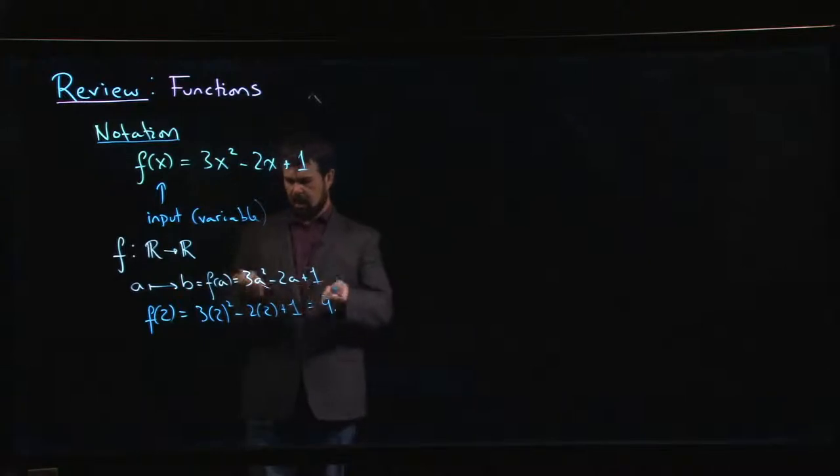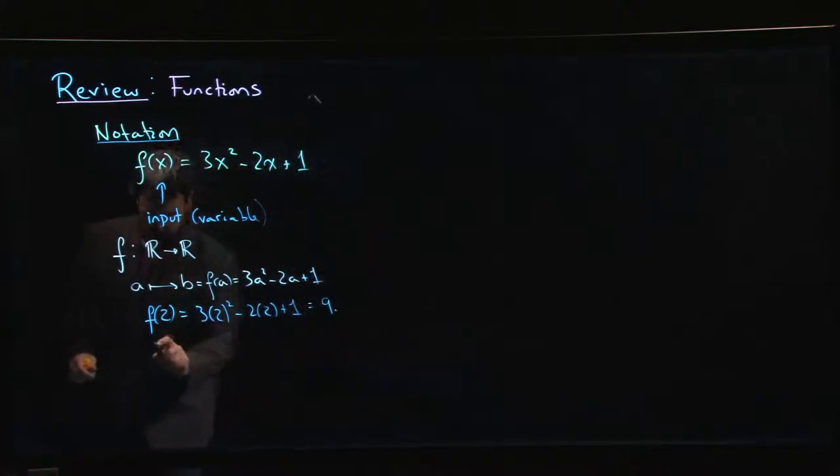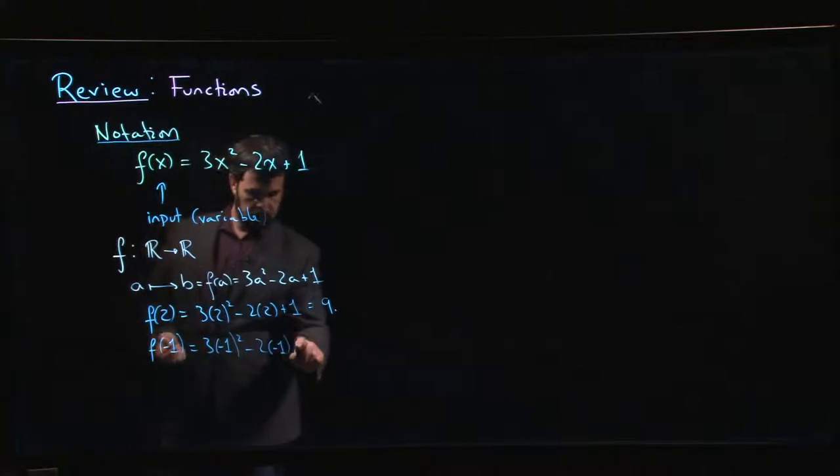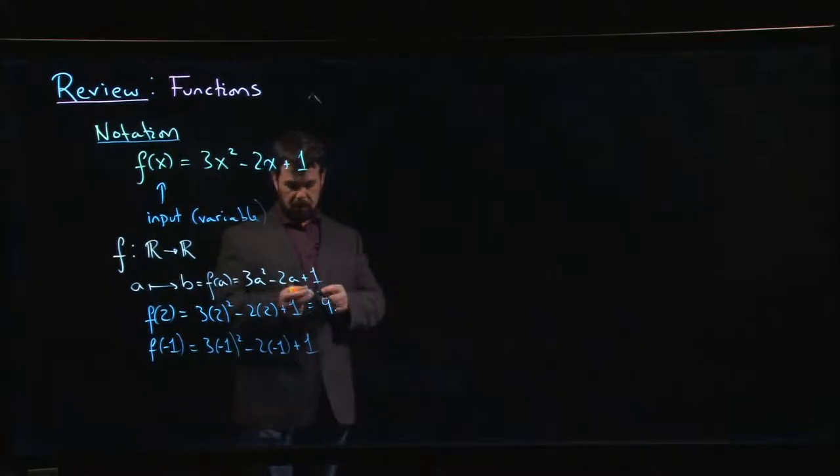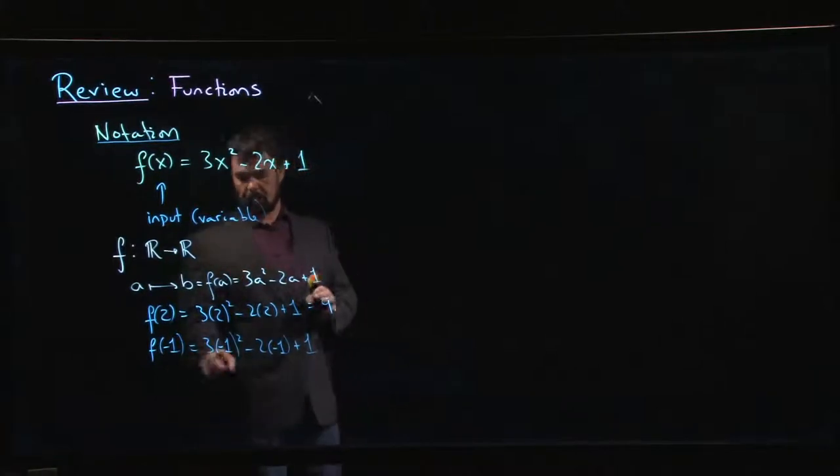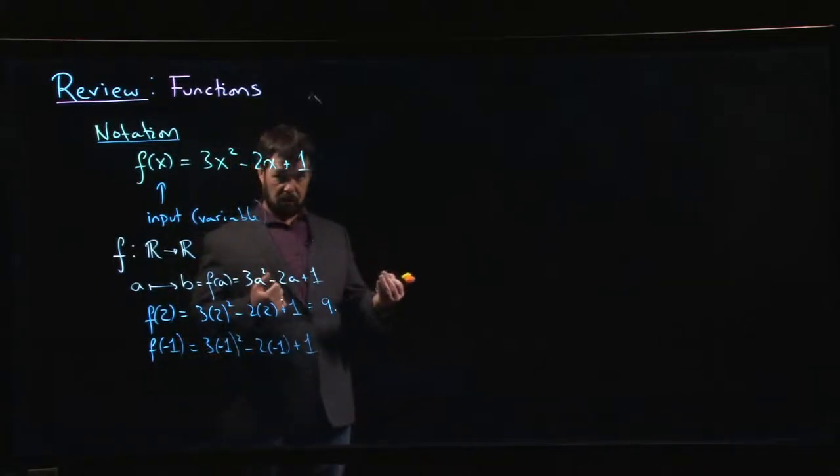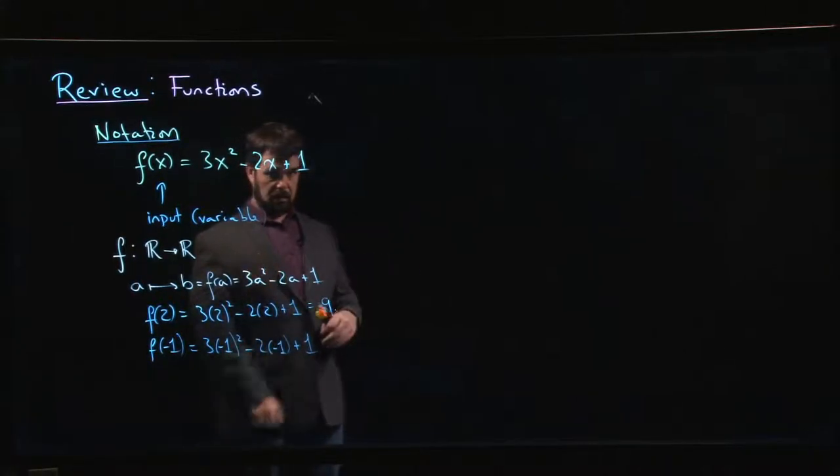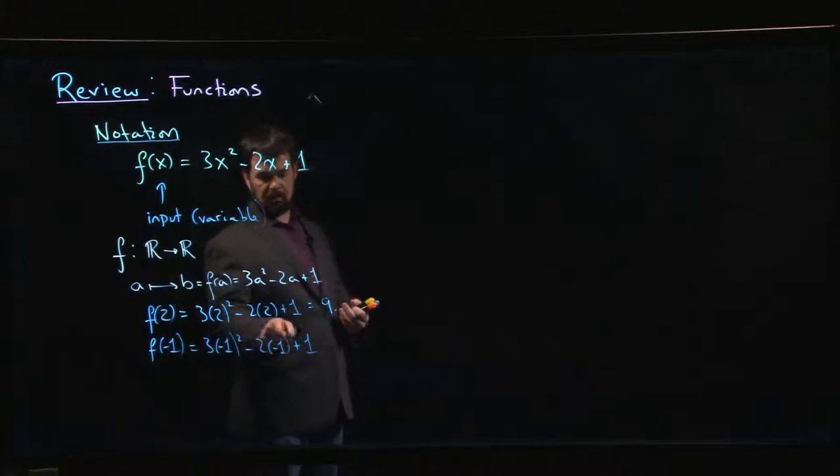It doesn't matter what number you choose. Let's say I want to do f(-1). I can do that as well: 3 times (-1)² subtract 2 times (-1) plus 1. Notice I'm using parentheses around my input into the function. This is good practice, especially once you get into negatives, because you don't want to miss something like the square of a negative. You don't want to make sign errors because you're being careless. -1 squared gives me +1, so this is positive 3. -2 times -1—double negative becomes positive—so 3 + 2 + 1, I get an outcome of 6.